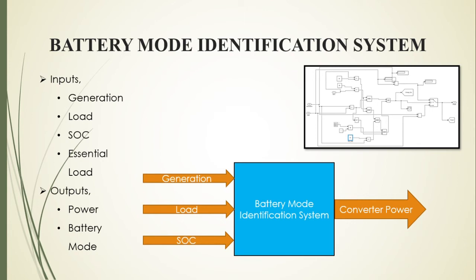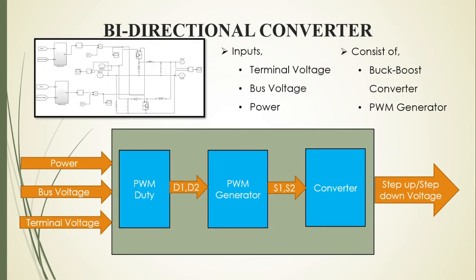Generation, load, and SOC are the inputs for the battery mode identification system, and it outputs the converter power which is used to operate the bidirectional converter at the desired duty ratio. Other than that, DC bus voltage and terminal voltage also input to the converter.